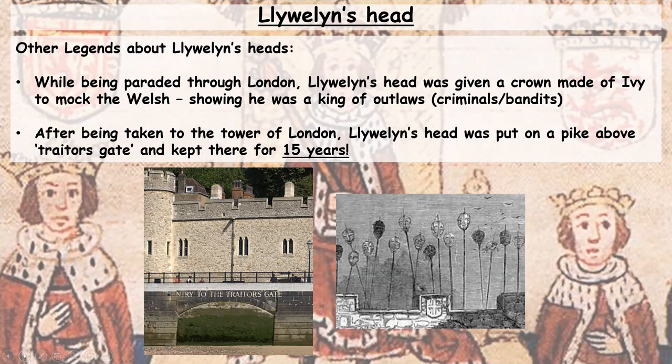After being taken to the Tower of London, Llewellyn's head was put on a pike above Traitor's Gate — you can see that in the photo. That is Traitor's Gate as it looks today, and that was the gate used to bring everyone who was going to be kept at the Tower of London. In the second picture you can see how the heads were displayed above Traitor's Gate, and in the left-hand picture you can see where that might have been. It is suggested that Llewellyn's head was kept there on a pike for 15 years.